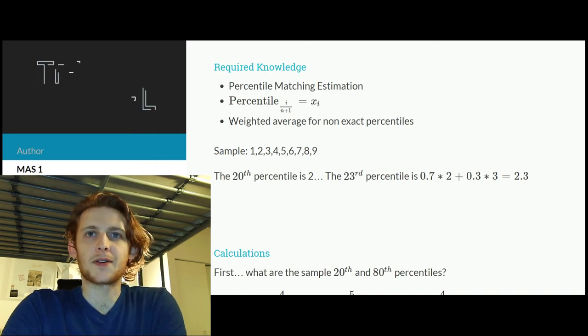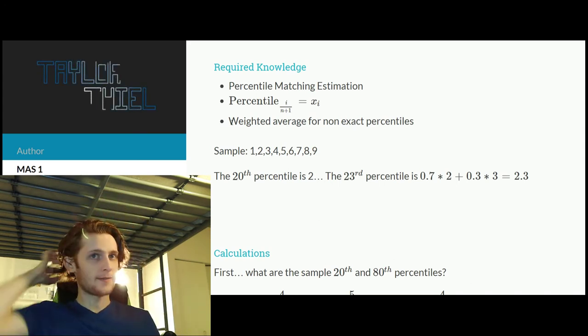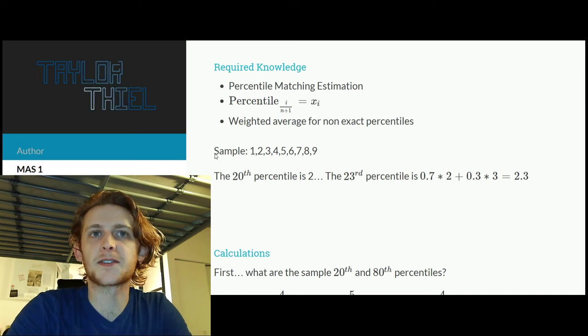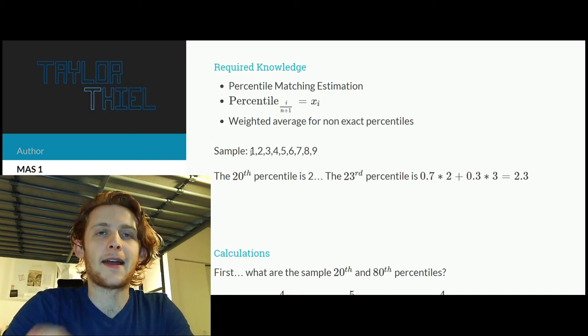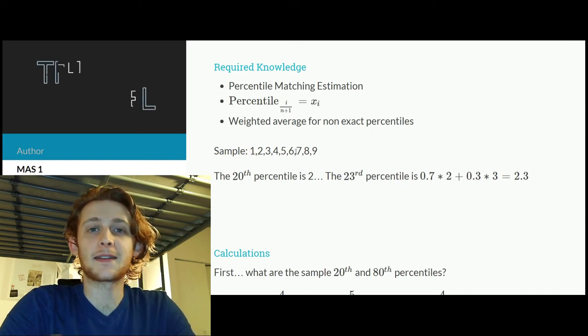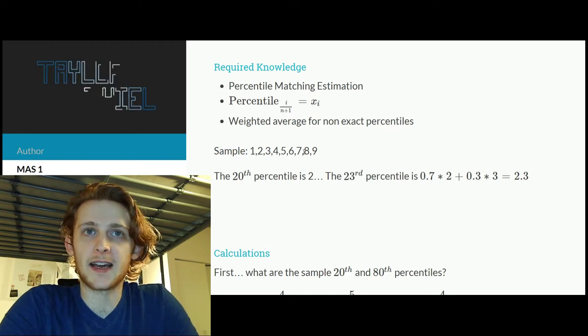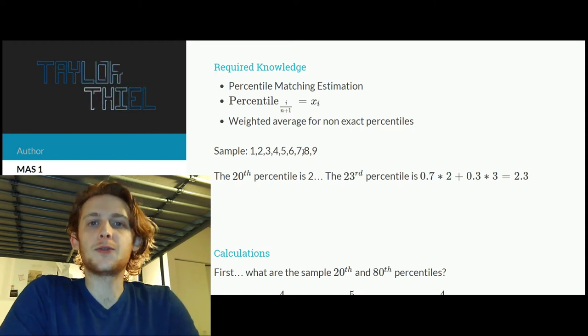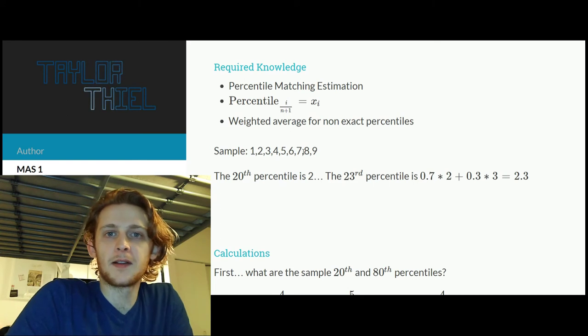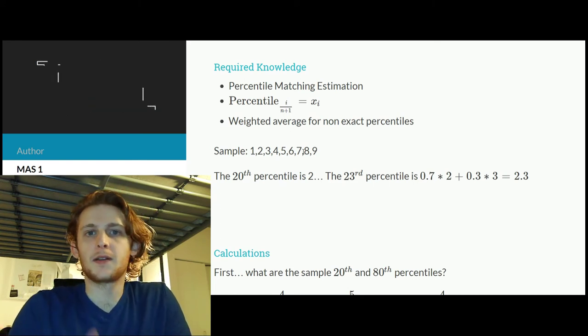And then finally we need to know the weighted average for non-exact percentiles. So this is the way Mahler does it in his solution manual, which is if you have, and I have an example here. So let's say we have this sample of data and I have it ordered to make it easier, and they very nicely work out to just be 1, 2, 3, 4, 5, 6, 7, 8, 9.